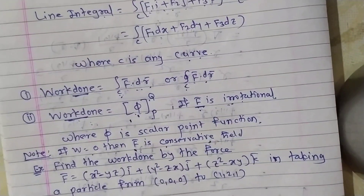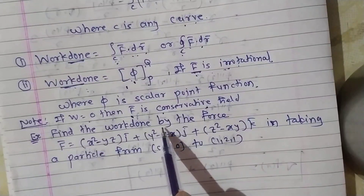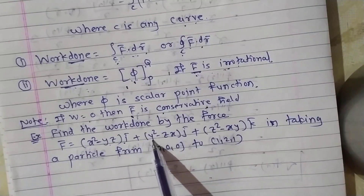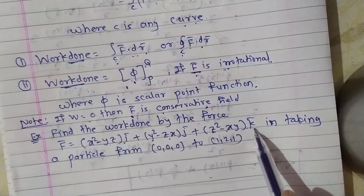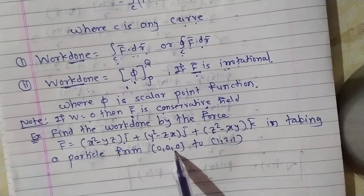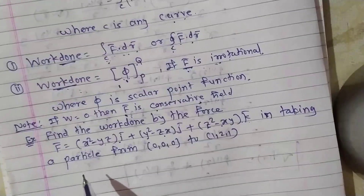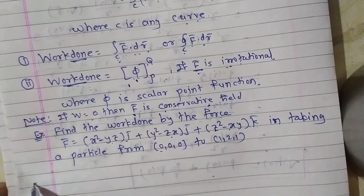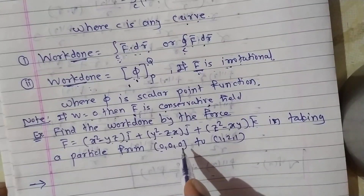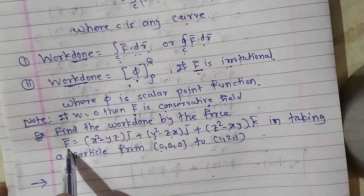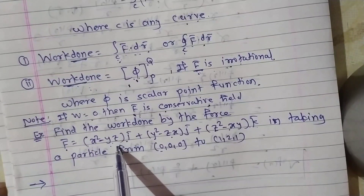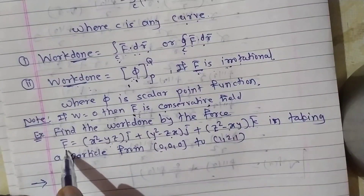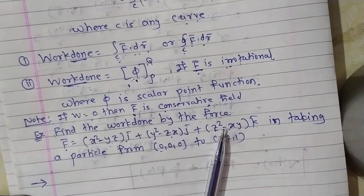Now let's take some problems. Problem 1: Find the work done by the force f̄ = (x²−yz)ī + (y²−zx)j̄ + (z²−xy)k̄ in taking a particle from (0,0,0) to (1,2,1). First, we check whether f̄ is irrotational. If yes, we can find the scalar potential φ and use the formula: work done = φ from P to Q.